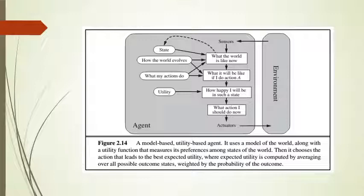The utility based agent uses a model of the world along with a utility function that measures its preferences. It chooses the action that leads to the best expected utility, where expected utility is computed by averaging over all possible outcome states weighted by the probability of the outcome. The agent's internal utility function is essentially an internalization of the performance measure.